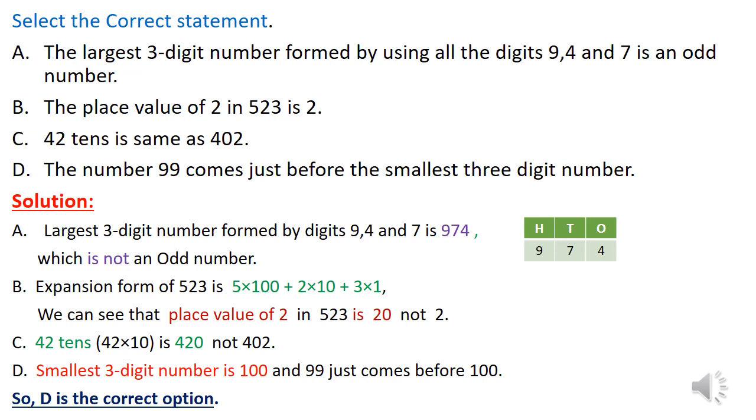D: The number 99 comes just before the smallest 3-digit number. Let's check this. Smallest 3-digit number is 100 and 99 just comes before 100.